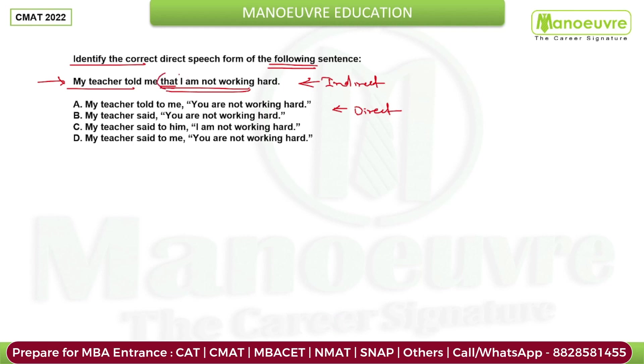Here we use the back substitution method. We have to check what is written in the options and match it back to the indirect sentence.